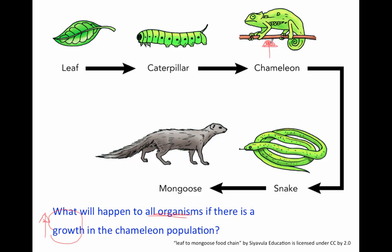So if the chameleons increase, then their predator is going to have more food, so the snake is going to increase, which would then cause its predator, the mongoose, to increase as well. But then if we go the other way — if the chameleon increases, there are going to be a lot more chameleons to eat the caterpillars, so the caterpillar population is going to decrease. So now if there aren't very many caterpillars to eat the leaves, then the leaf population is going to increase. Please clear your dry erase boards right now.